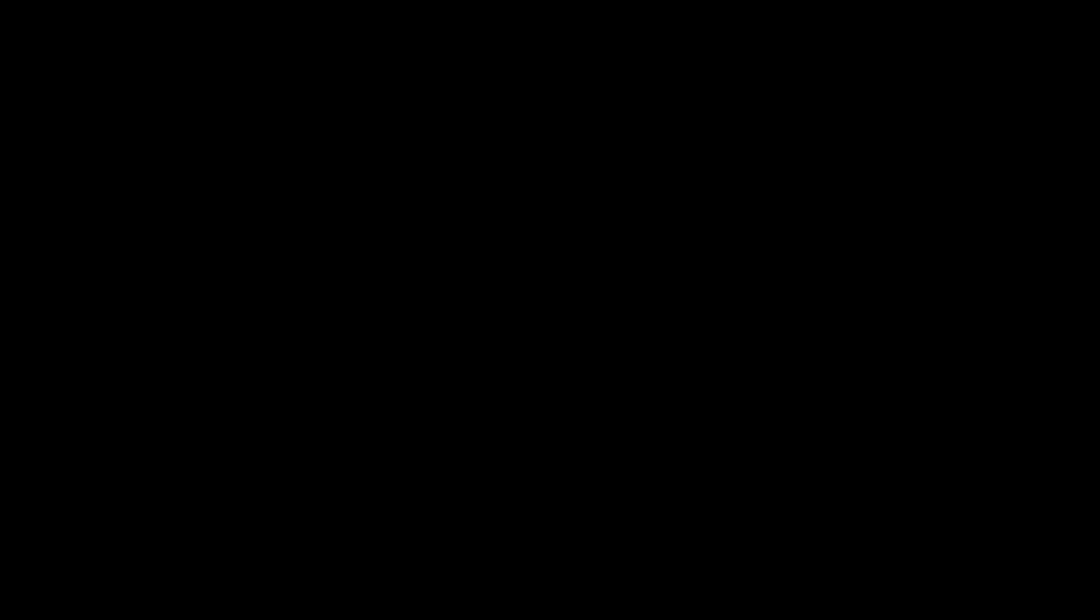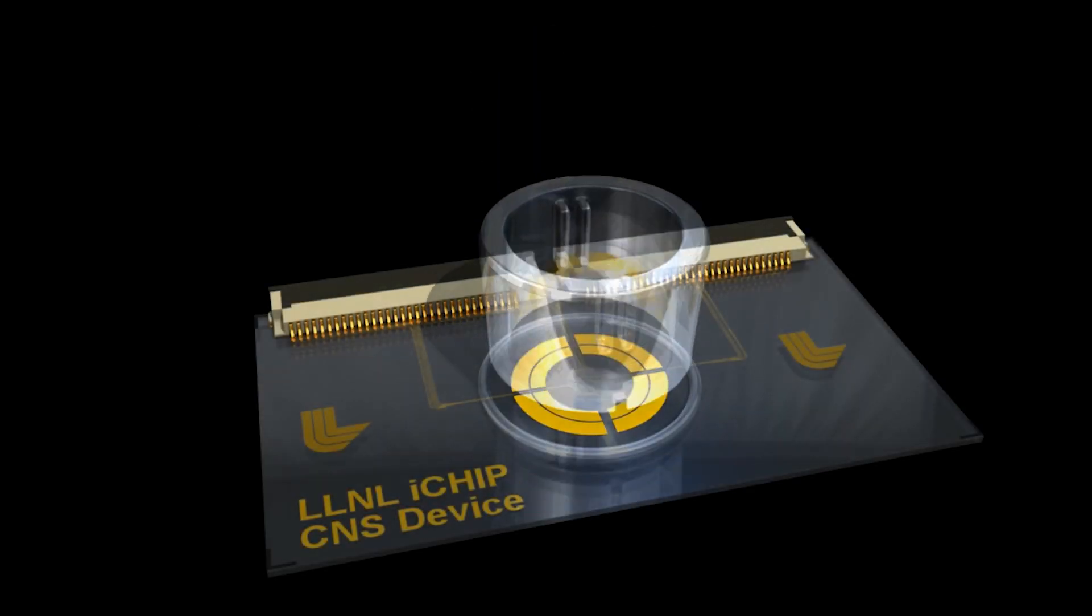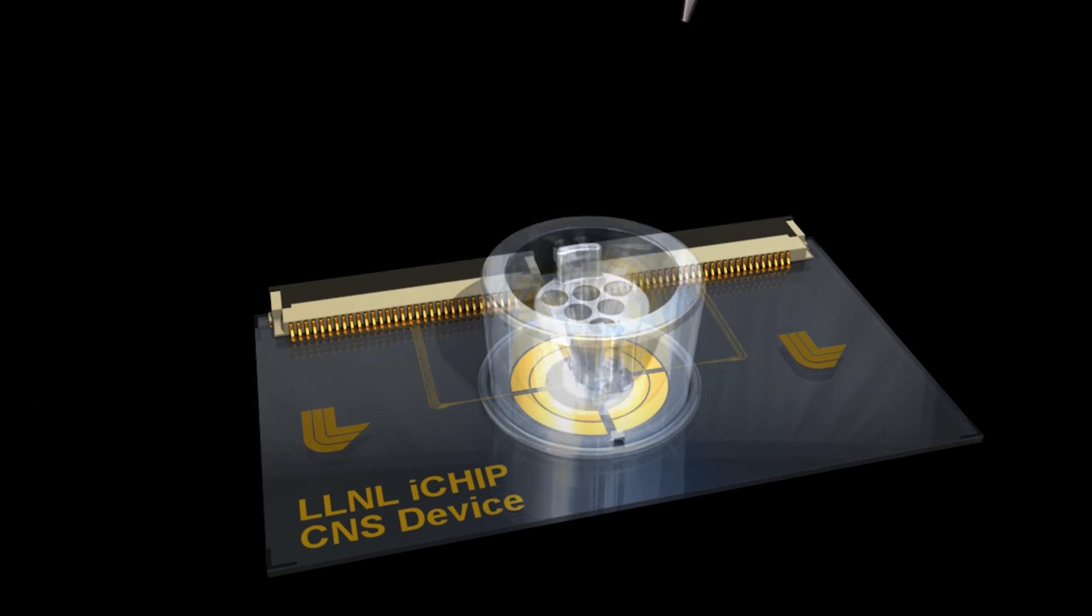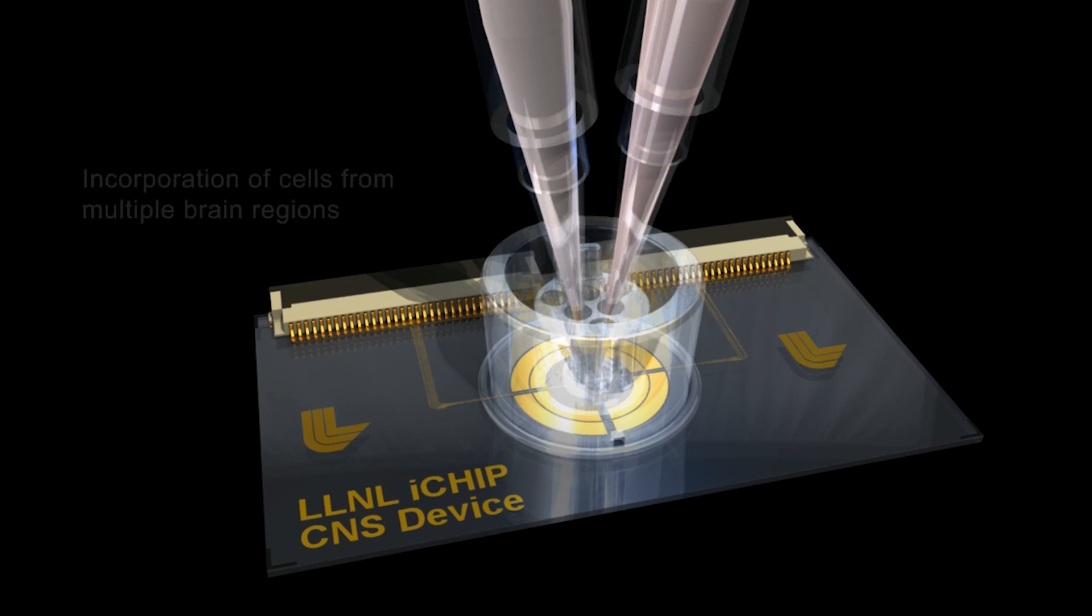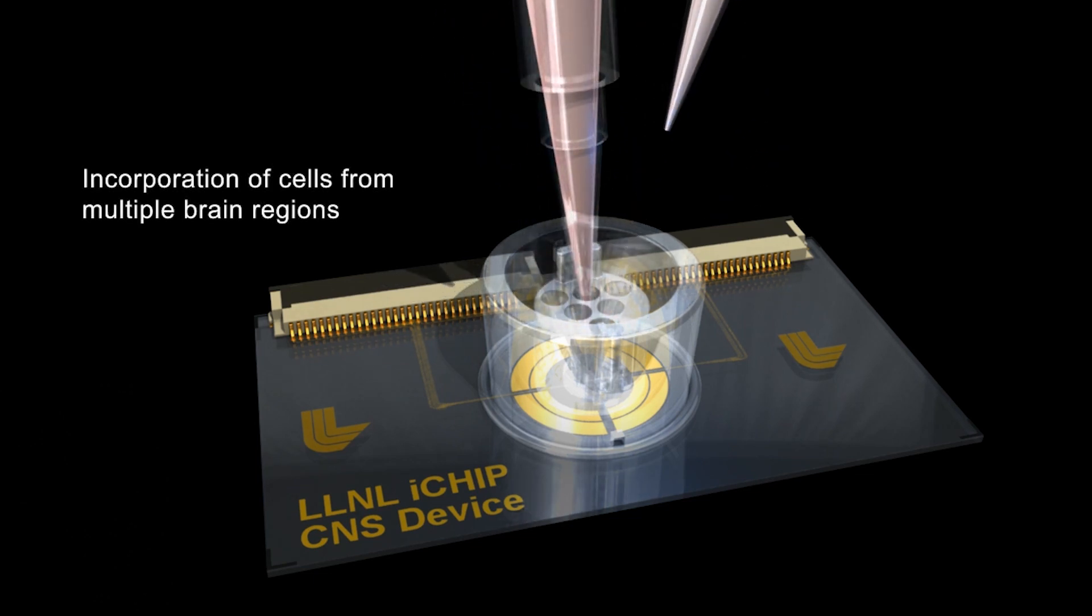The Brain on a Chip consists of a few different pieces. One is a microphysiological device in which cells are cultured and maintained, remaining viable for weeks at a time. Ideally, they function as they would in the body.